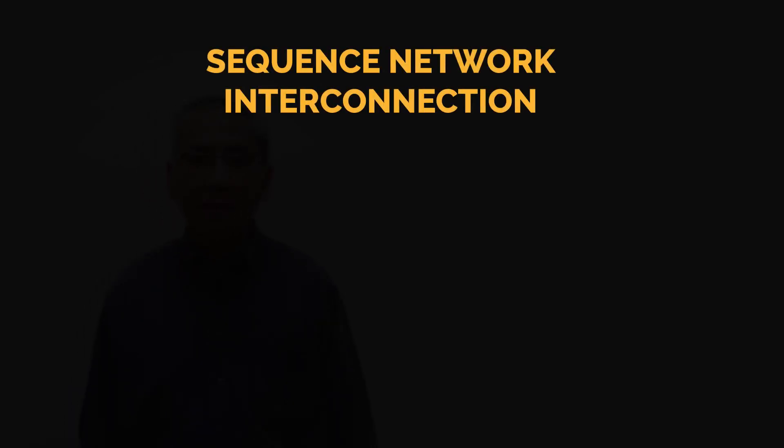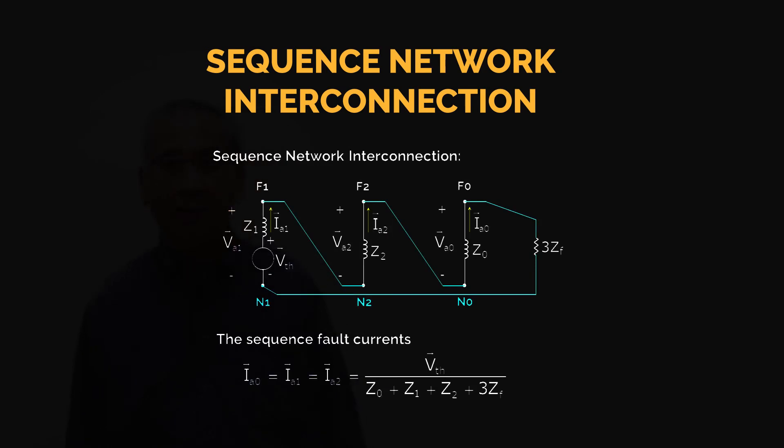In the next slide, this represents the sequence network interconnection of the three sequence networks, considering that IA0, IA1, and IA2 are equal. Having known the Thevenin equivalent of these sequence networks—positive, negative, and zero-sequence networks—how are they interconnected? Based on the result, IA0, IA1, and IA2 are all equal, we can say that the interconnection will be in series.